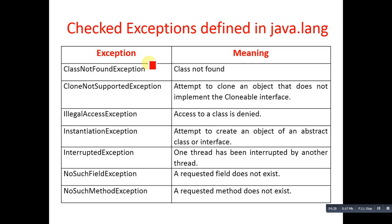Now this is the list of checked exceptions, which you have to handle or throw to the caller of the method in which these exceptions are raised. First is ClassNotFoundException. Second is CloneNotSupportedException. Third is IllegalAccessException. Fourth is InstantiationException. Fifth is InterruptedException. Sixth is NoSuchFieldException. Seventh is NoSuchMethodException. This is the full list of checked exceptions that you have to handle or throw to the caller of the method.